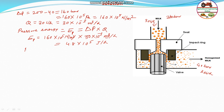This pressure energy is converted into heat energy, which is conserved by the change in temperature in the milk. Heat energy E_H equals M-dot times C times delta T, where M-dot is the mass flow rate, C is the specific heat of milk at 3.8 kJ per kg per Kelvin, and delta T is the change in temperature in Kelvin, which equals the change in degree Celsius.